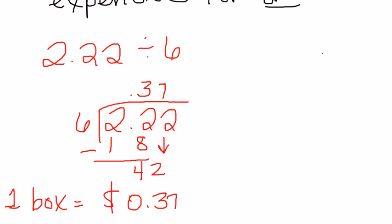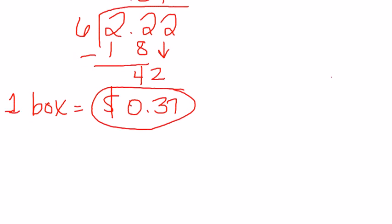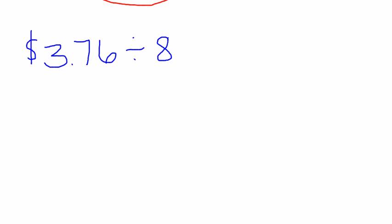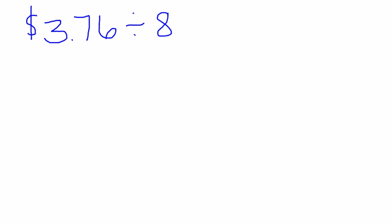Now we need to see about the other offers. Our next problem will be $3.76 divided by eight boxes. I'm going to rewrite this with $3.76 inside, our eight on the outside, and bring my decimal to the top.